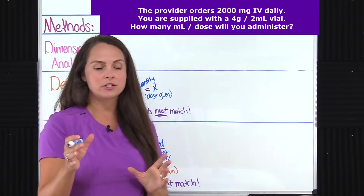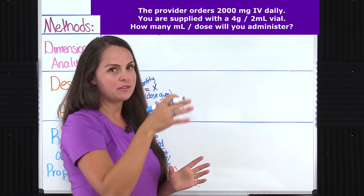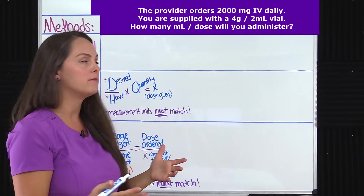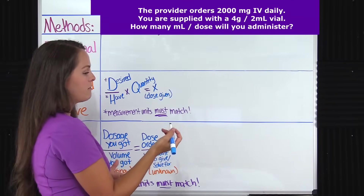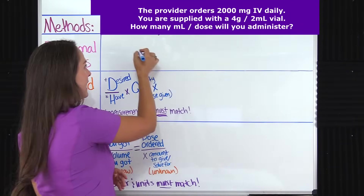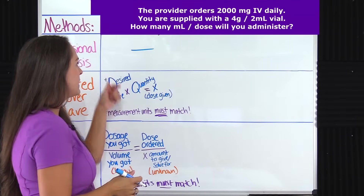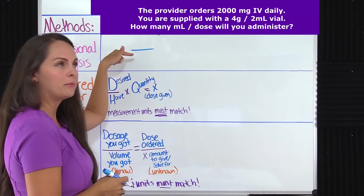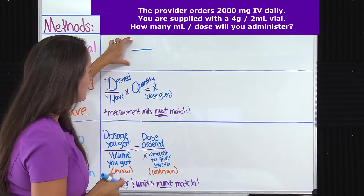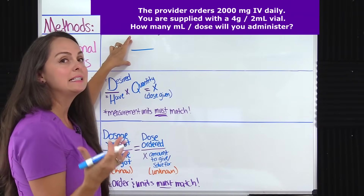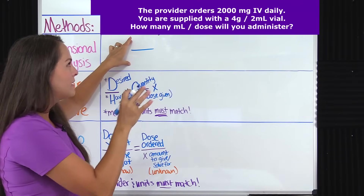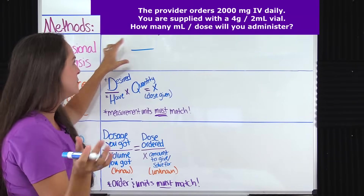With these conversion factors within the problem, you're going to multiply them with each other, and then at the end you're going to divide. They are expressed in fraction format. With a fraction, you have that line that separates the numerator — the top number — from your denominator, which is the bottom number. These two things should be equal to each other, just expressed in different units. Let me show you how to work this problem.